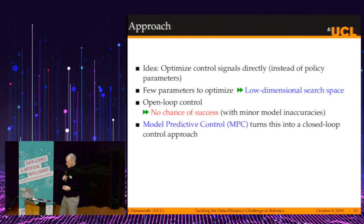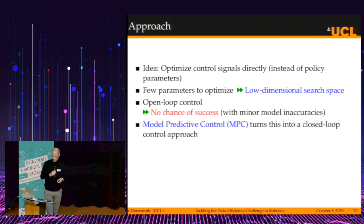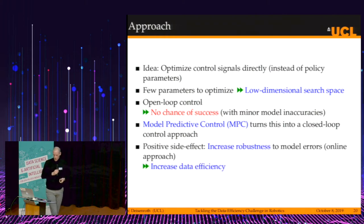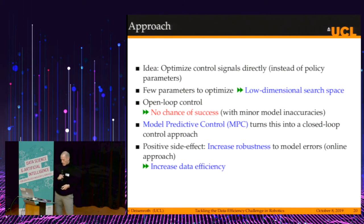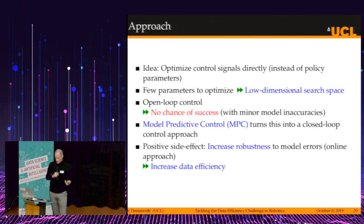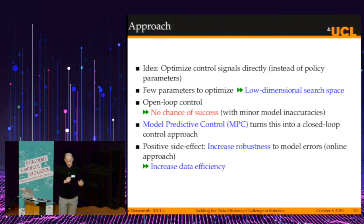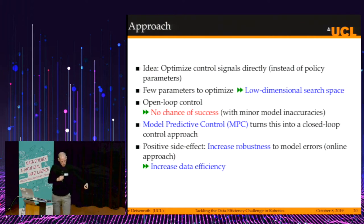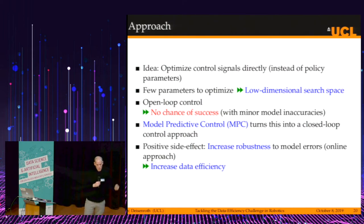If we have minor model inaccuracies, there's no way we can succeed with an open-loop strategy. But there's a way to fix this using model predictive control, turning it into a closed-loop control approach. The positive side effect is that we can increase robustness to model errors — because it's an online planning approach, greater robustness to model errors also means faster learning.